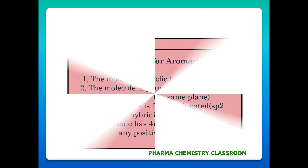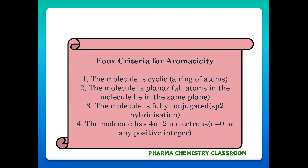There are some criteria for aromaticity. First, the molecule should be cyclic or have a ring structure. Second, the molecule is planar — all atoms in the molecule lie in the same plane. Third, the molecule is fully conjugated, having sp2 hybridization. Fourth, the molecule has 4n+2 pi electrons, where n is equal to 0 or any other positive integer.